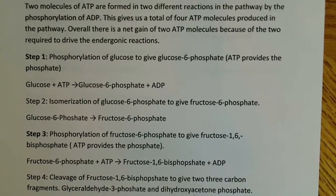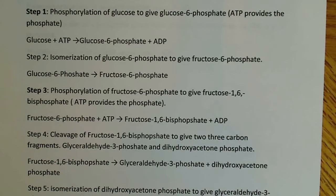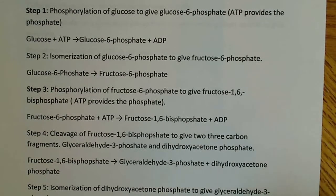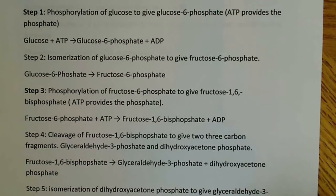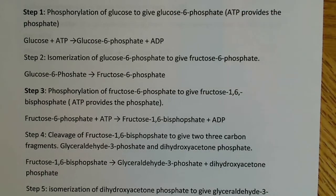Step one is an extremely important regulated step of glycolysis. The enzyme that catalyzes the reaction is hexokinase. Hexokinase is found in things like muscle cells. There's an alternate form of the enzyme in the liver called glucokinase. So in the liver there's glucokinase, and in the muscles there's hexokinase. The more important and common one you'll be asked about is hexokinase, because that one is actually subject to regulation, whereas glucokinase isn't subject to the same regulation.